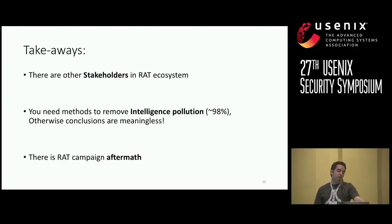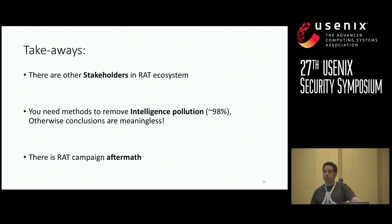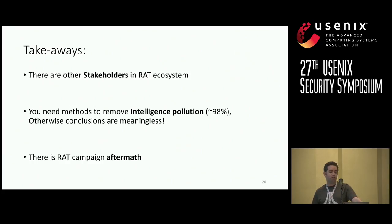In all, what we learned is there are other stakeholders in the RAT ecosystem that introduce measurement pollution. Measurements from sinkholing and scanning shouldn't be taken at face value without thorough analysis. You need this analysis to take accurate measurements of victims and attackers. If you just run a sinkhole, the numbers you're getting are likely horribly polluted — in our measurement, about 98% of connections were pollution. Further, every time we scrutinized our victims, we found a new way to discard nearly half of them as imposters. We also identified campaign residue aftermath and targetable infrastructure hosting RAT attackers.